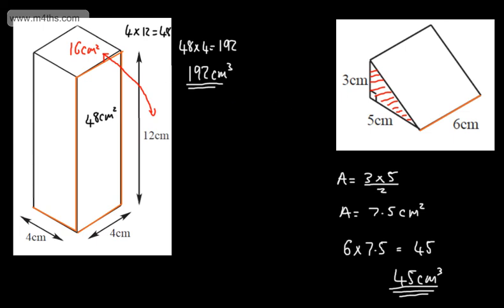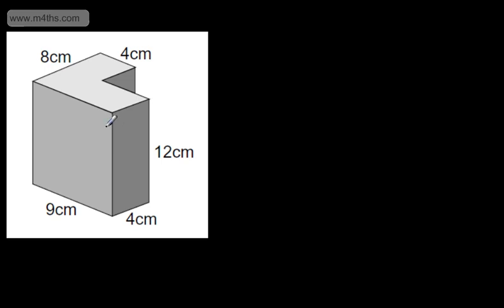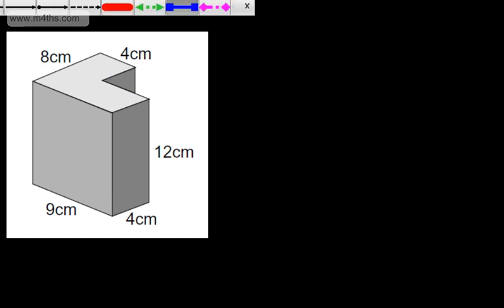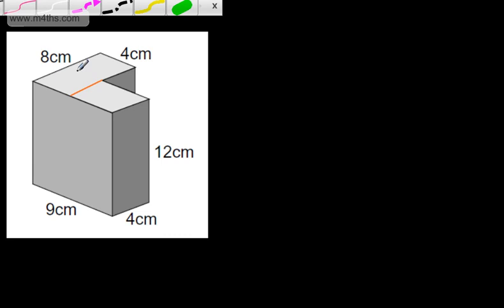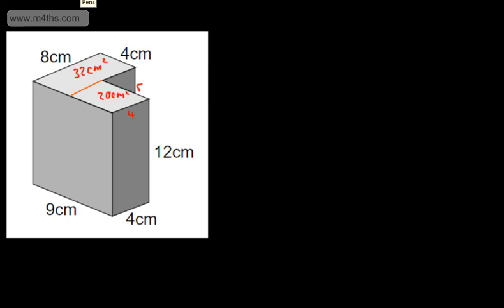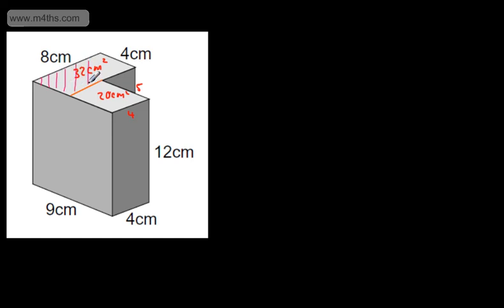So these are some straightforward examples — we find the area of the cross-section and multiply it by the length. What we have here is a composite or compound shape. The constant cross-section is a little L-shape or a Tetris block. I'm going to find the area of this cross-section by splitting it up. We've got a 4 by 8 rectangle, so the area of this rectangle is 32 cm squared. For the other part, the total length is 9 and one side is 4, so the other is 5. This 5 by 4 gives 20 cm squared. Adding together, the total area of the cross-section is 52 cm squared.